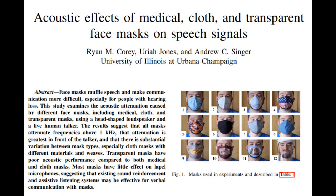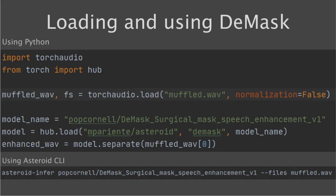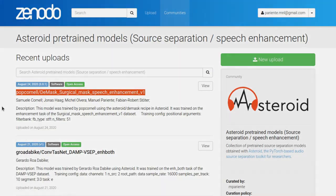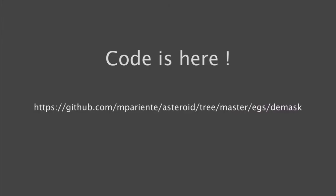To train D-mask, we generated synthetic data using recorded face mask impulse responses from this paper. Then, we built and trained a simple speech enhancement model with Asteroid. To use the pre-trained model, you can load it with Asteroid or TorchHub, or you can directly use Asteroid's command line interface to try it out on your own files. You need to browse to our Asteroid models community hosted on Zenodo, choose the model you want, and copy its name. You can find all D-mask-related code at this address, with a readme explaining the process and the recipe to reproduce the results.